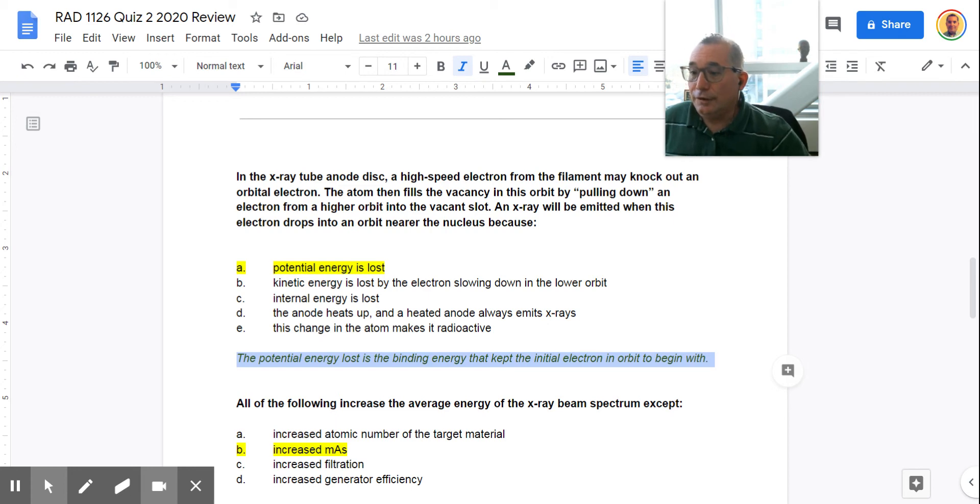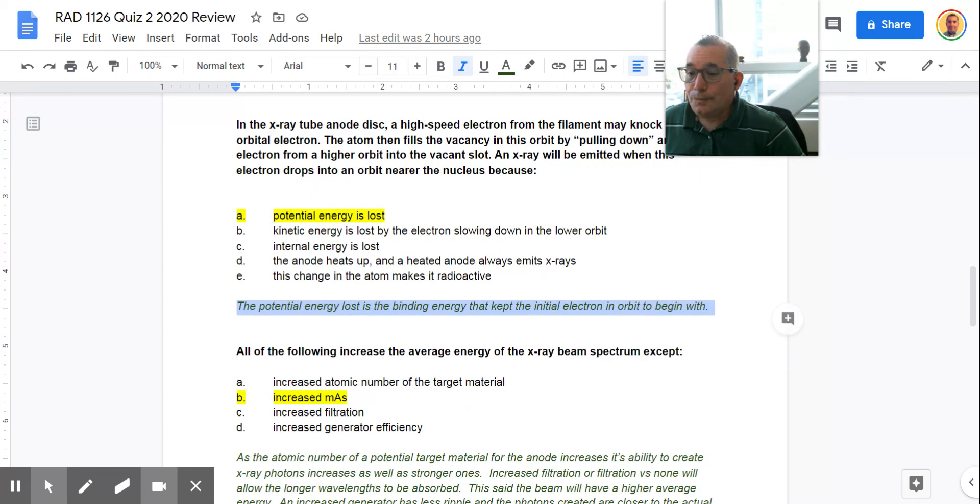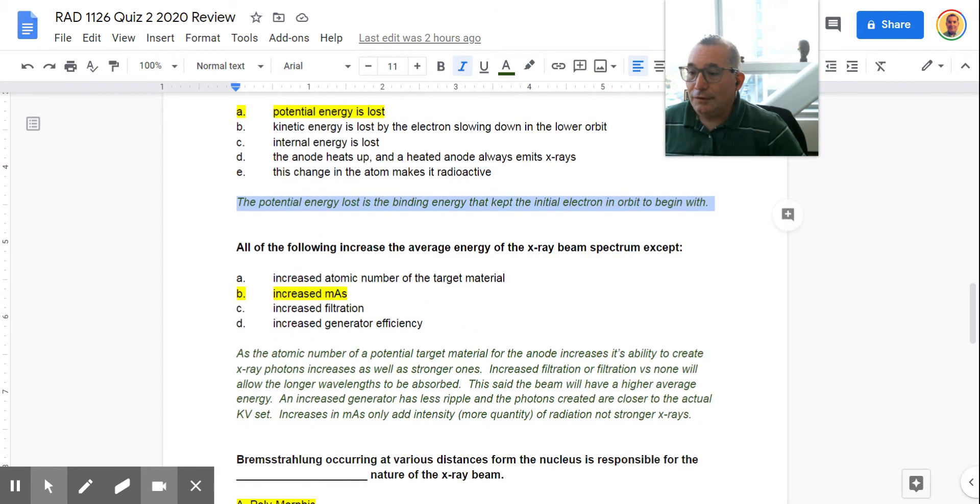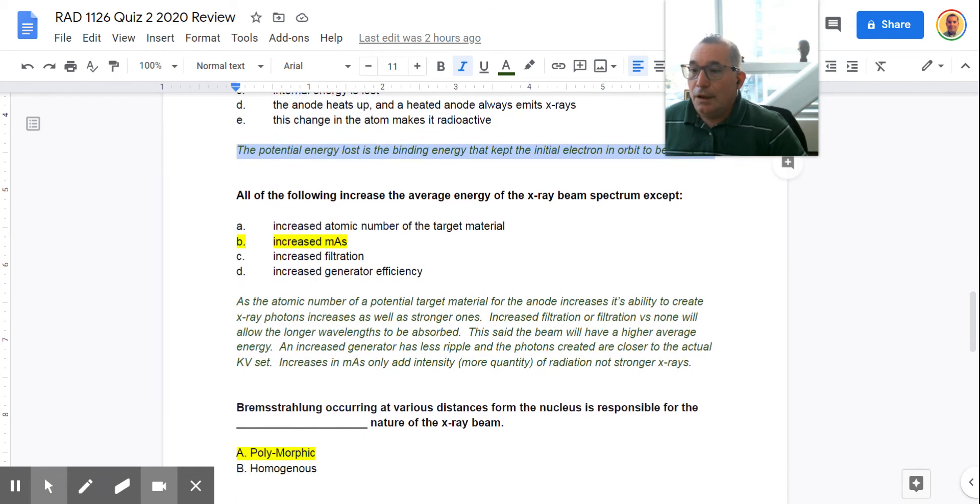All of these other ones are not correct. Kinetic energy is lost by the electron slowing down in its lower orbit. There's no slowing down here. Internal energy is lost. I'm not really sure what that even means. The anode heats up. That has nothing to do with anything either. And the atom doesn't suddenly become radioactive. Tungsten is not radioactive.